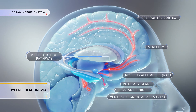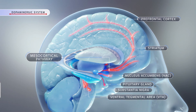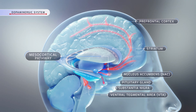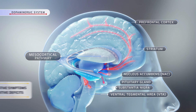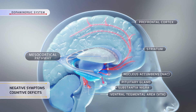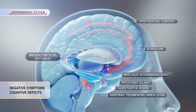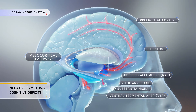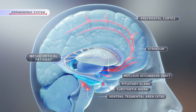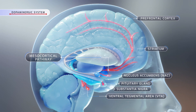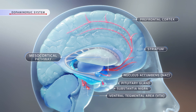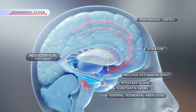Treatments that rely on dopamine receptor blockade have limited effects on ameliorating negative and cognitive symptoms, as baseline dopamine activity in the mesocortical pathway is already reduced in schizophrenia and deficits in serotonin and glutamate circuits are not targeted.